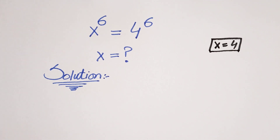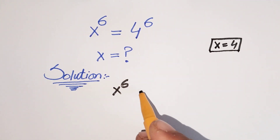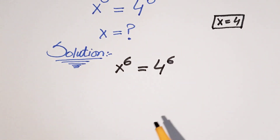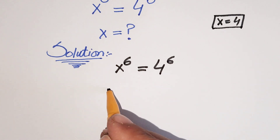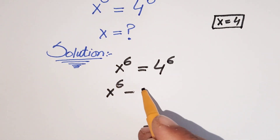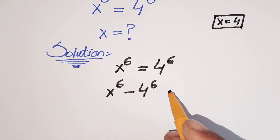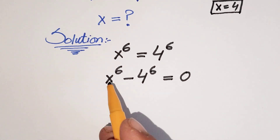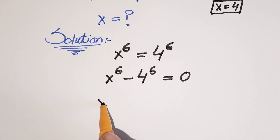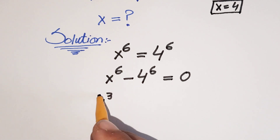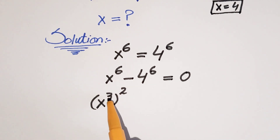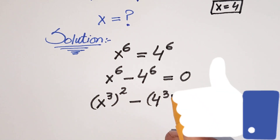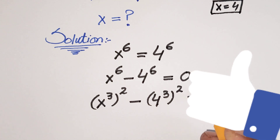Starting our question: x to the power 6 is equal to 4 to the power 6. We shift 4 to the power 6 to the left-hand side to get x⁶ minus 4⁶ equals 0. Now x⁶ can be written as (x³)² and 4⁶ as (4³)², so we have (x³)² minus (4³)² equals 0.